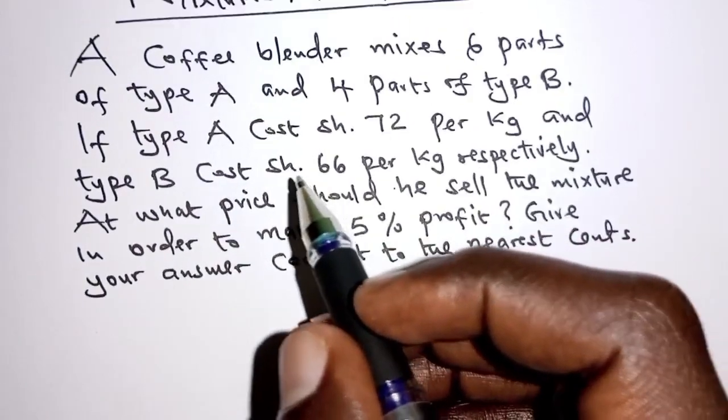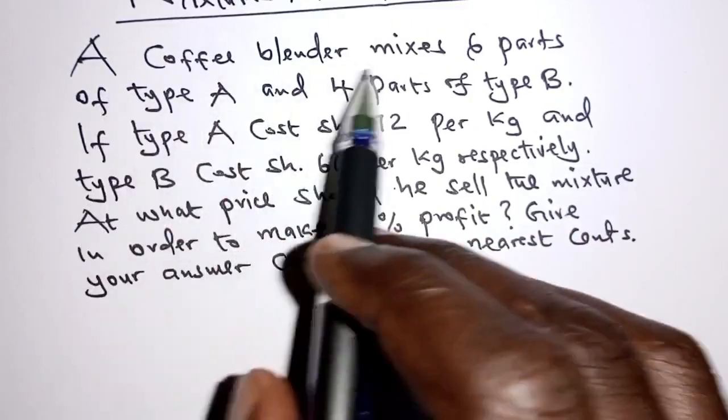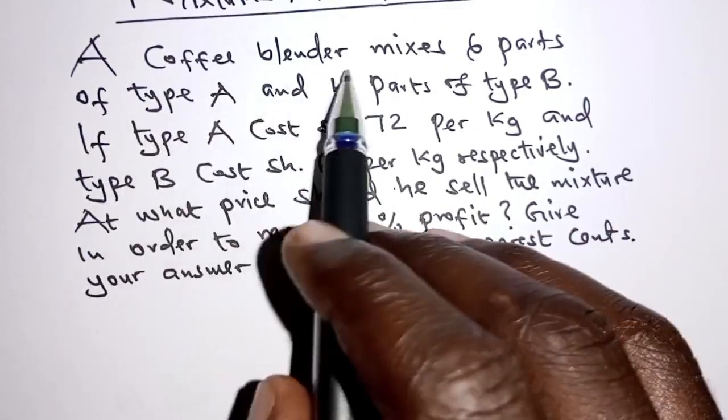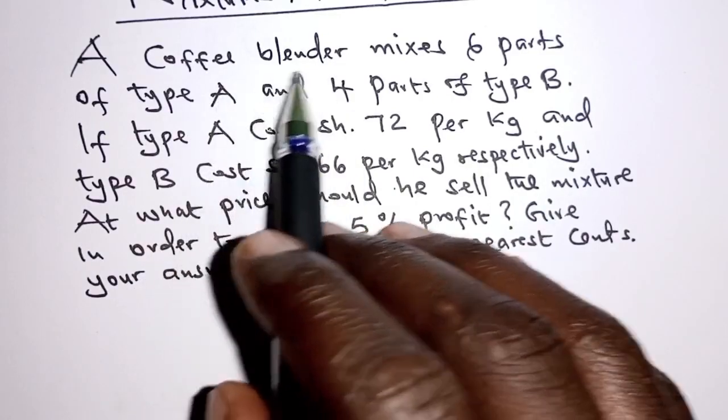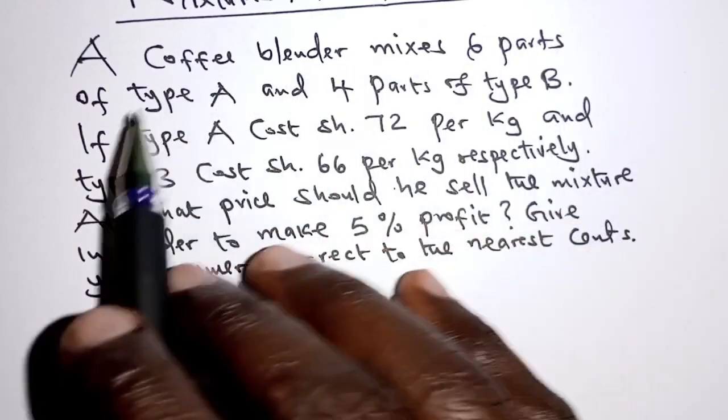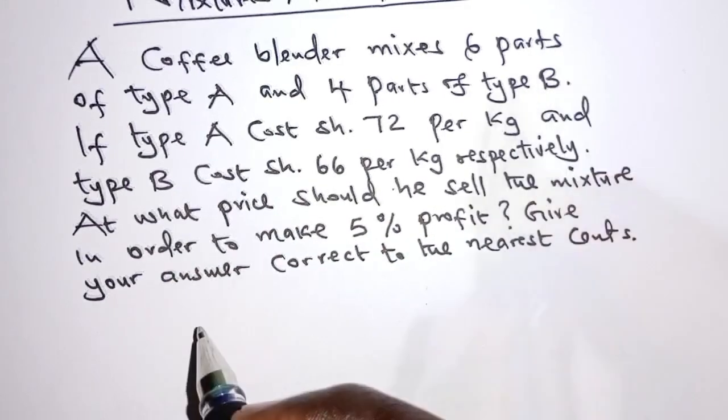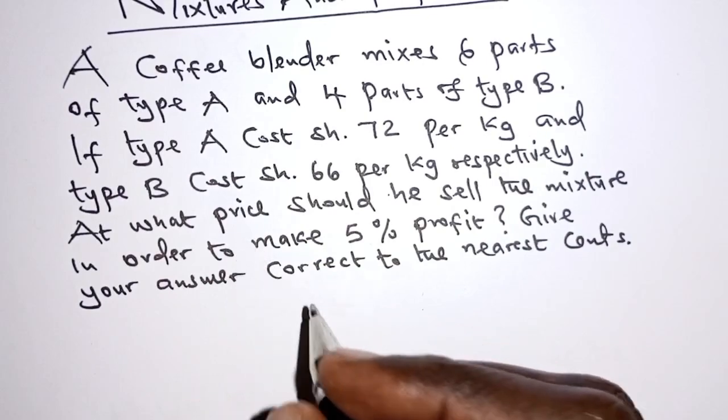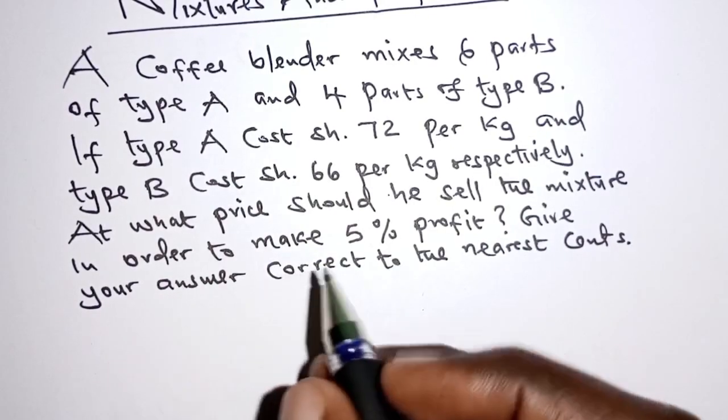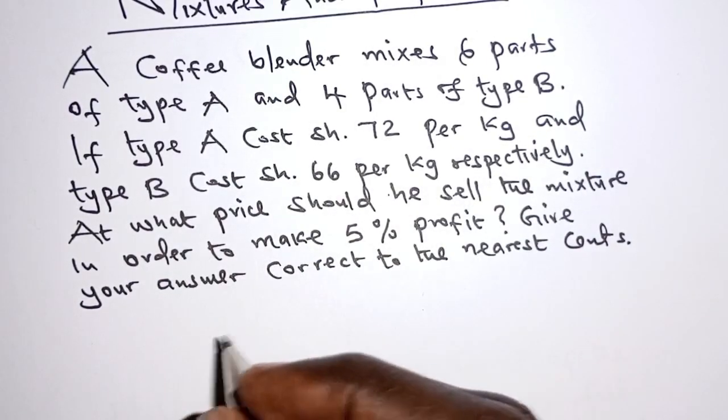The question tells us that the types of coffee were mixed in six parts for type A and four parts of type B. The parts here should help us in determining the ratio in which the two types of coffee were mixed.